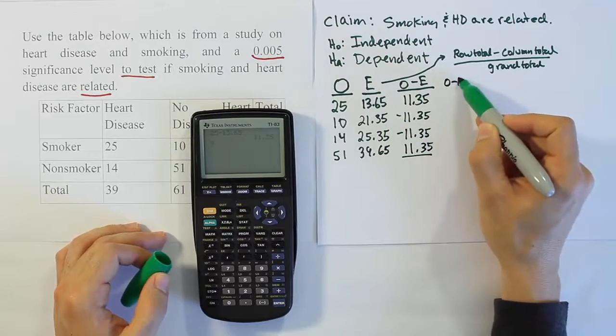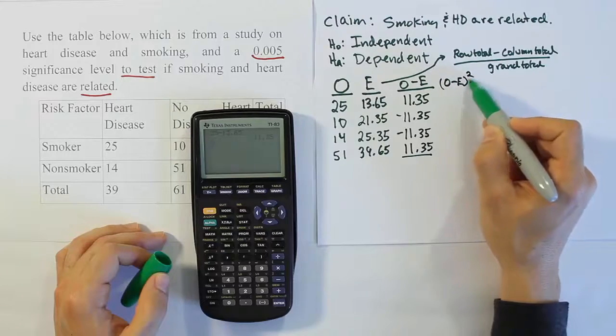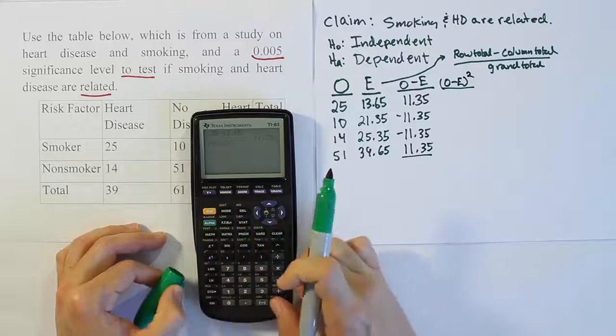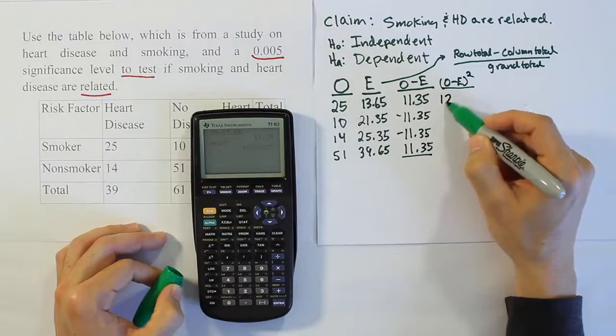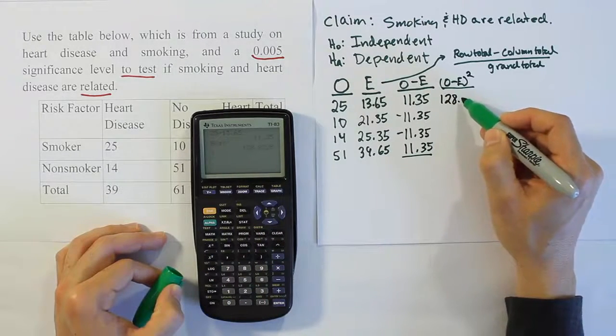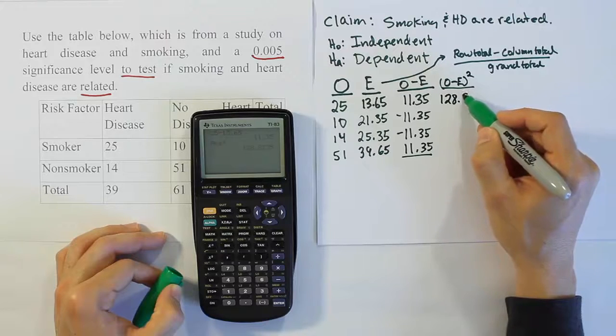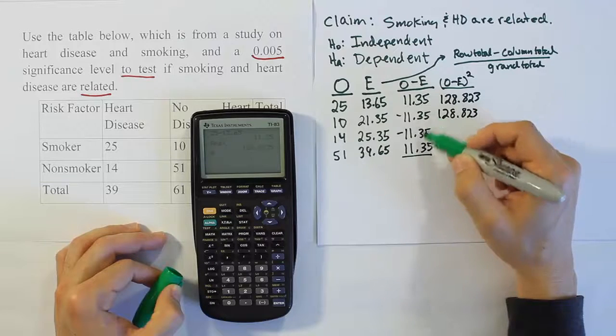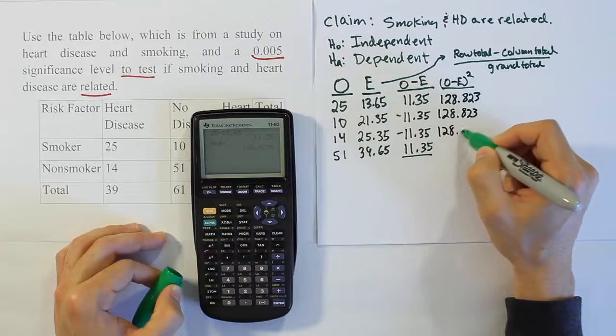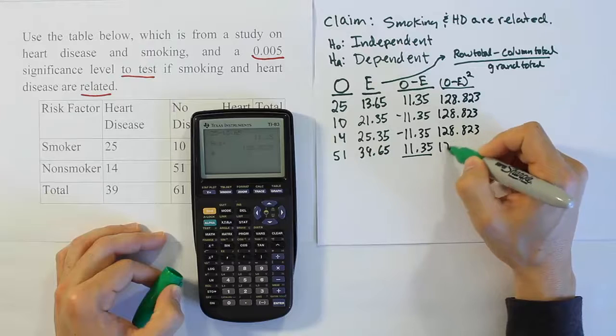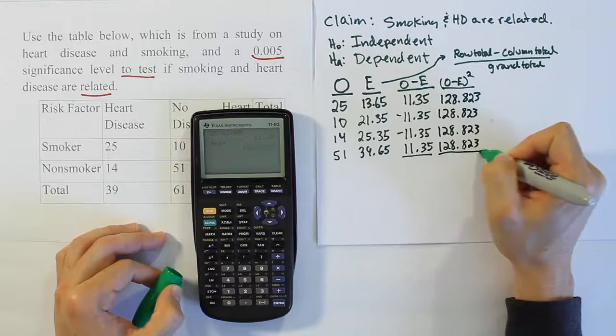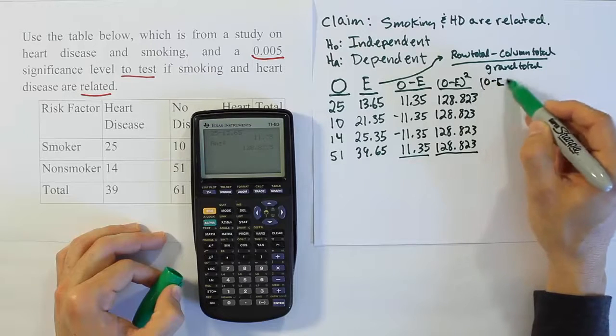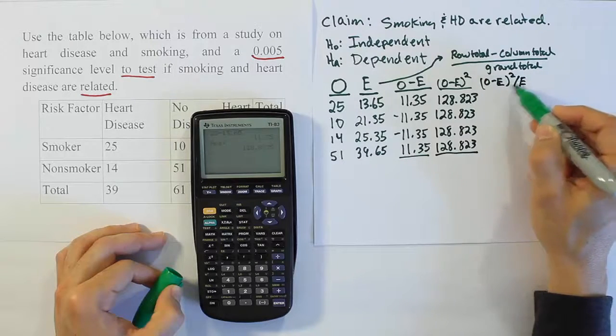Then observed minus expected quantity squared is our next step of the process. We just have to square 11.35, and once we do that, we'll get the answer 128.823. It's going to be the same throughout the table here because all these numbers are the same.